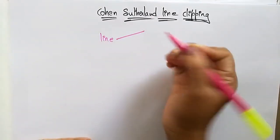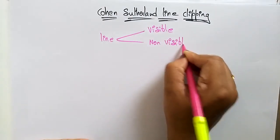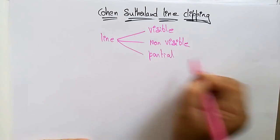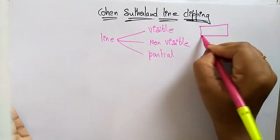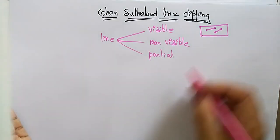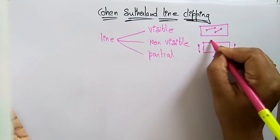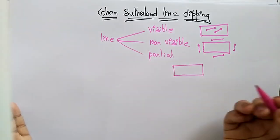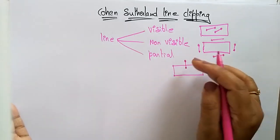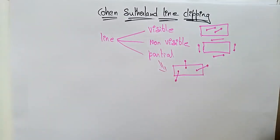A line segment can be visible, non-visible, or partially visible. Visible means both endpoints of the line are present inside the clipping window. Non-visible means both endpoints are outside the clipping window. Partially visible means one endpoint is inside and one endpoint is outside the clipping window.